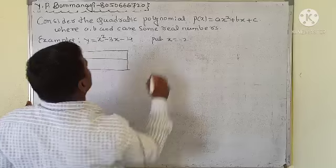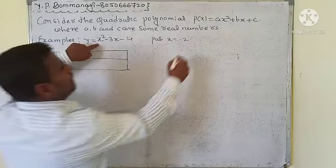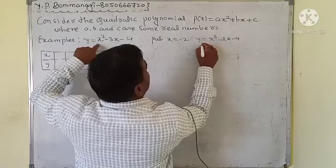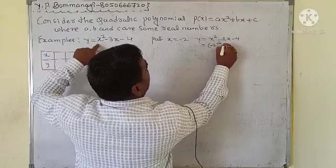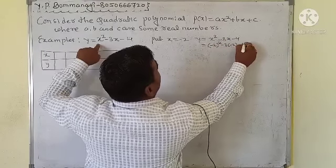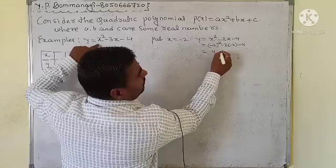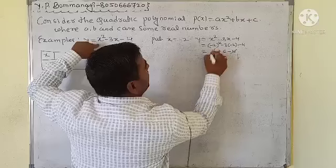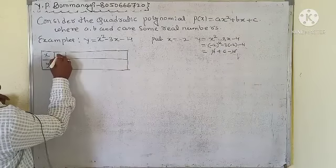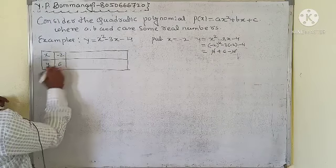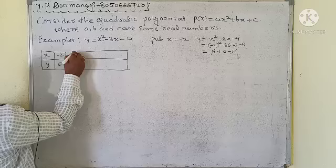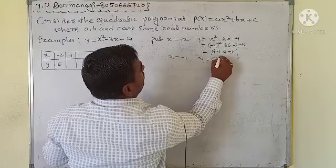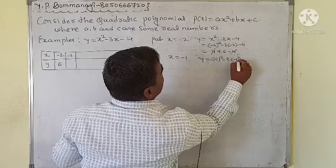When x = -2: y = (-2)² - 3(-2) - 4 = 4 + 6 - 4 = 6. So when x = -2, y = 6.